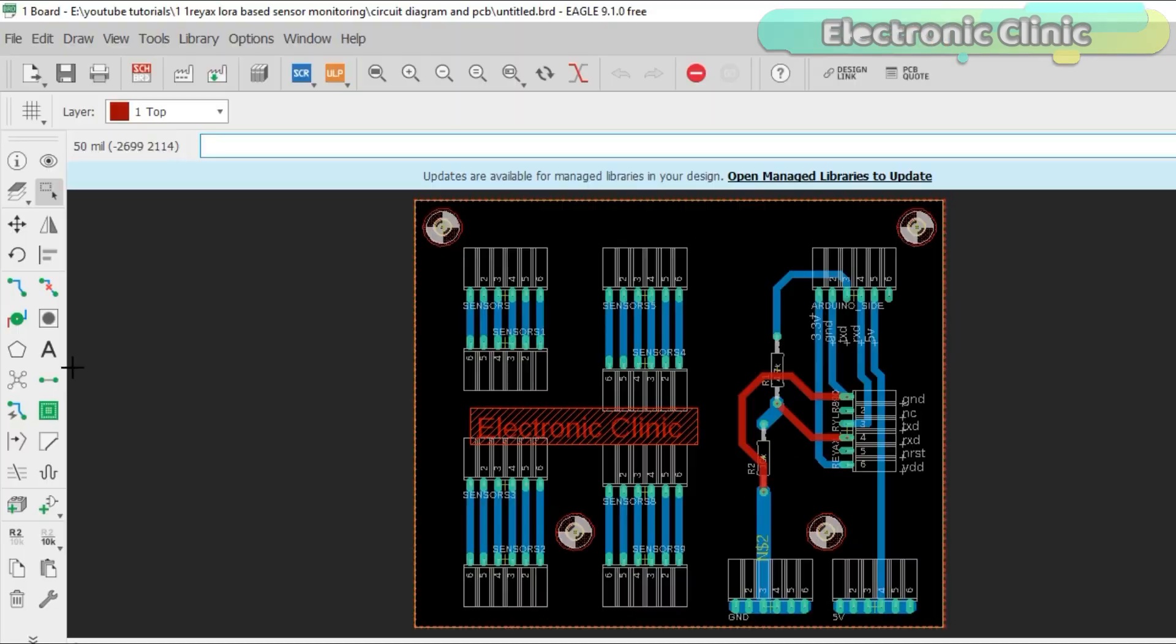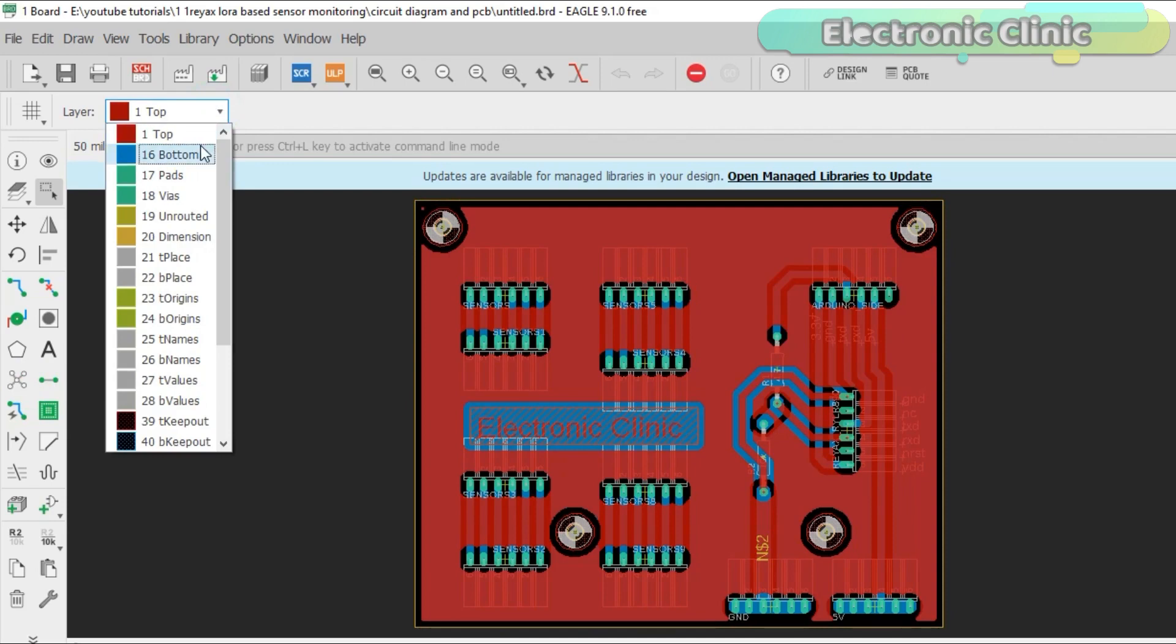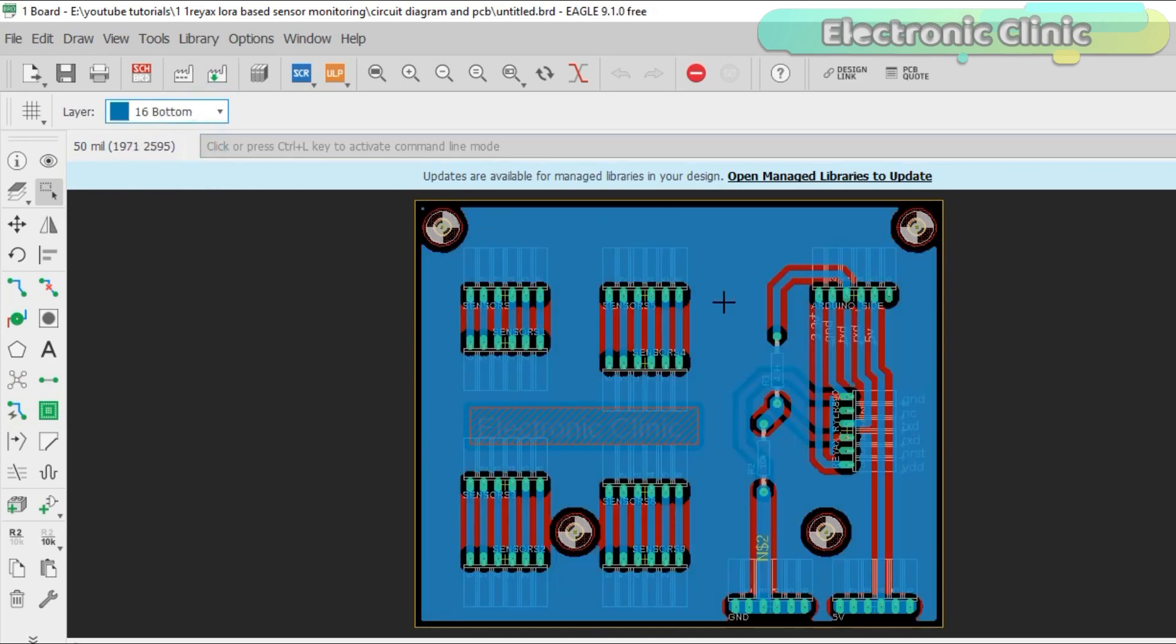After I was satisfied with the PCB layout then I generated the Gerber files and placed an online order on the PCBWay official website. I have a separate video on this in which I have explained how to design a PCB and how to place an online order. You can find the link in the description.